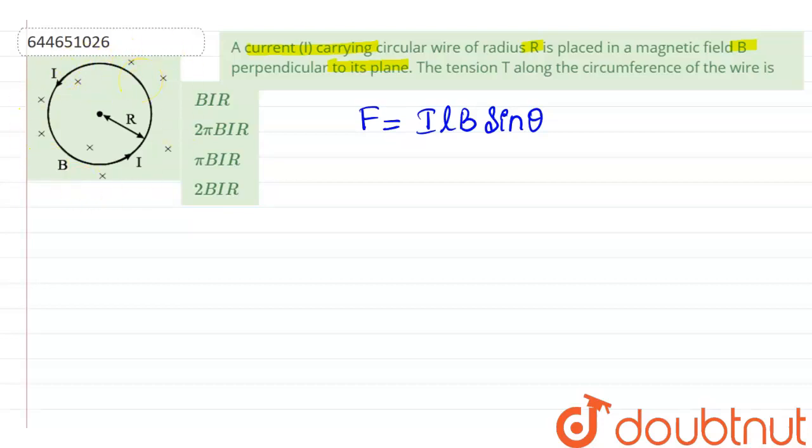we can consider an element on the circular wire. Let's say this is the element which we consider. So let's redraw the circular wire here and consider its element.